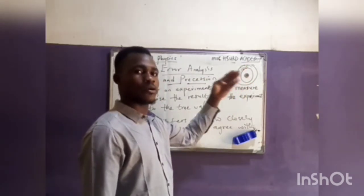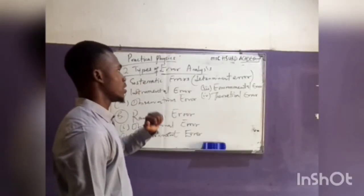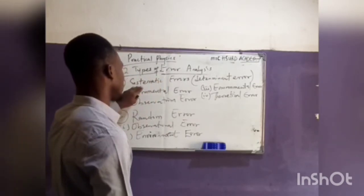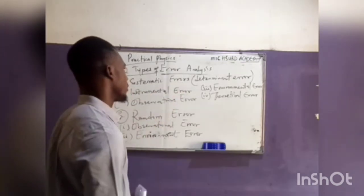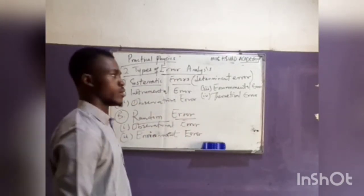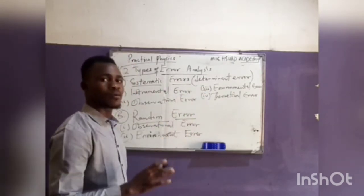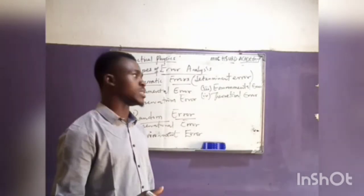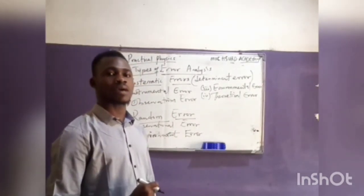We can still have a point where it is both accurate and has high precision. Now, talking about the types of error analysis, we group them into two types. The first one is the systematic error and the second one is the random error. The systematic error is also called the determinant error. This type of error is one that we can identify, and if we follow the principle, we can actually eliminate it.